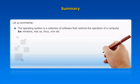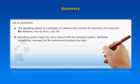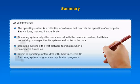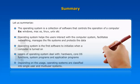An operating system is a collection of software that controls the operation of a computer; examples include Windows, Mac, Linux, and Unix. It helps the user interact with the computer system, facilitates networking, manages file systems, and protects data. The operating system is the first software to initialize when a computer is turned on. Layers of an operating system deal with hardware, core OS functions, system programs, and application programs. Depending on the number of users, operating systems are classified into single-user and multi-user systems.